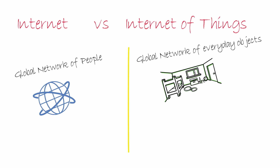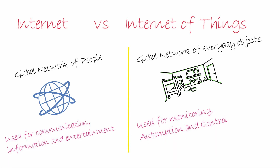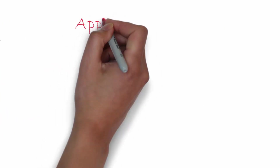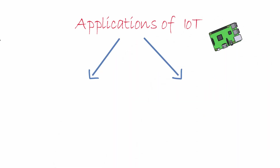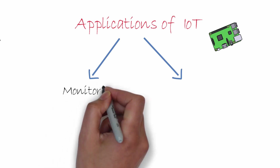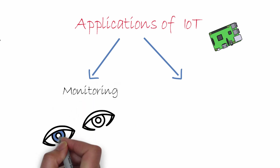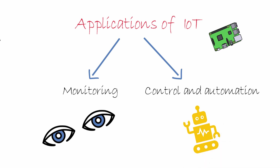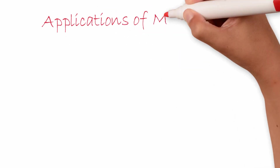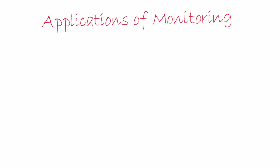But what is the use of connecting the objects together and how is it going to help us? Let's see some examples of applications of IoT. Applications of IoT can be divided into two broad categories: the first one is monitoring, and the second one is control and automation.